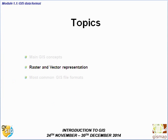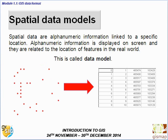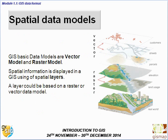Let's see how we can represent geographic data. We can represent it with different spatial data models, meaning that there is alphanumeric information linked to a specific location. That alphanumeric information is displayed on screen and relates to the location of features in the real world — this is called a data model. We have two main data models: vector and raster. All spatial information is displayed in GIS using spatial layers, and a layer can be based on either a raster or vector data model.